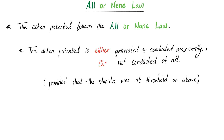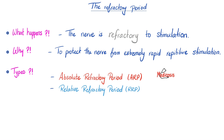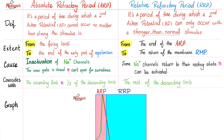There is no half-response — it's either zero or one. The refractory period is a period during which the nerve is refractory to stimulation. It protects the nerve from extremely rapid repetitive stimulation that could destroy it. There are two types: the absolute refractory period and the relative refractory period. During the absolute refractory period, no second action potential can be generated no matter how strong the stimulus, because the sodium channels have just closed and cannot reopen due to inertia.